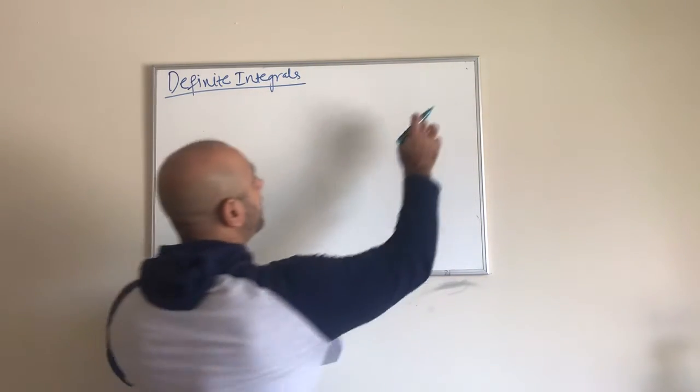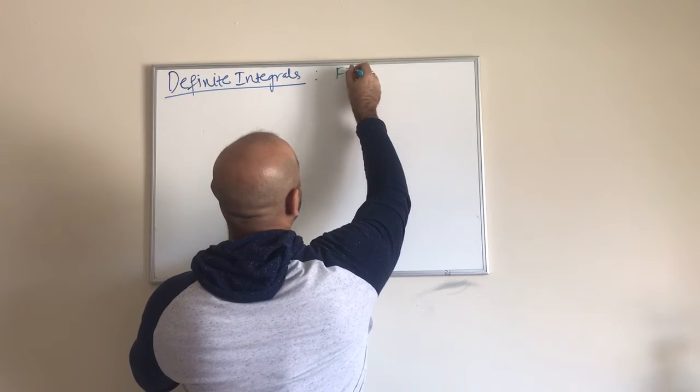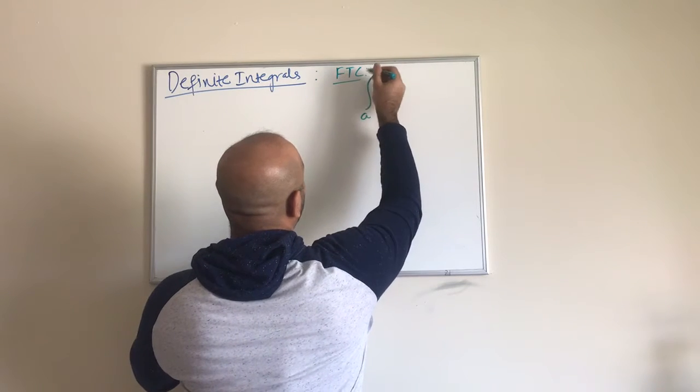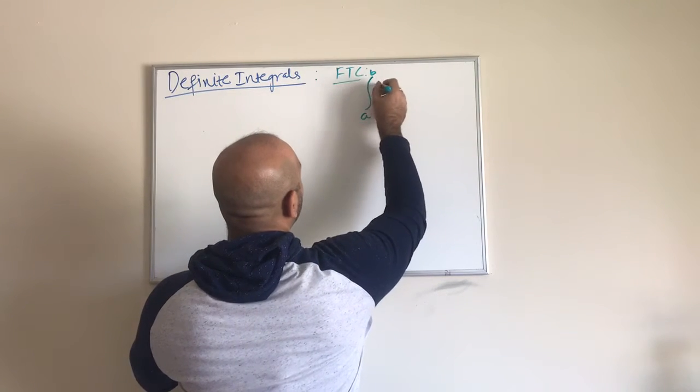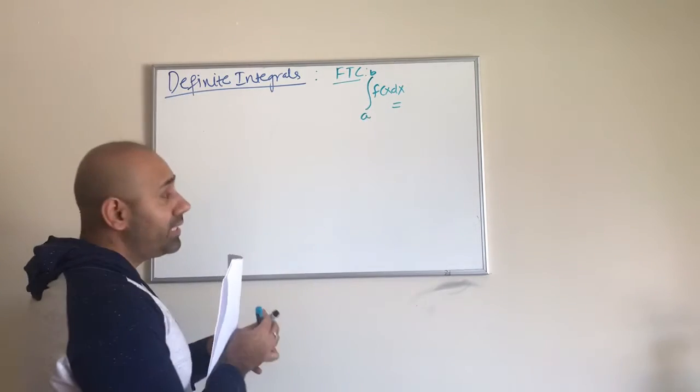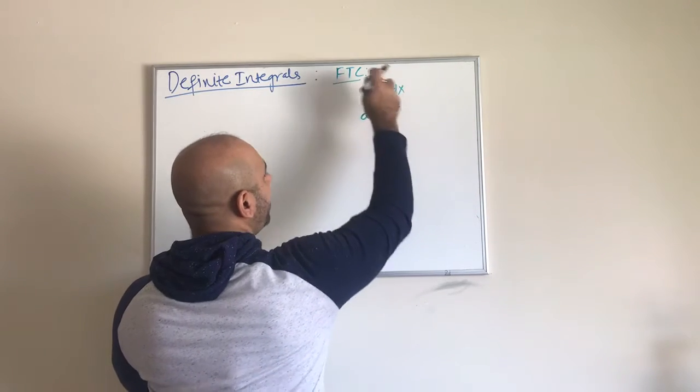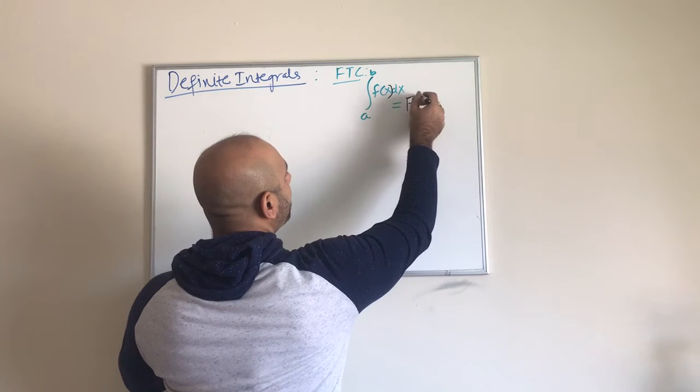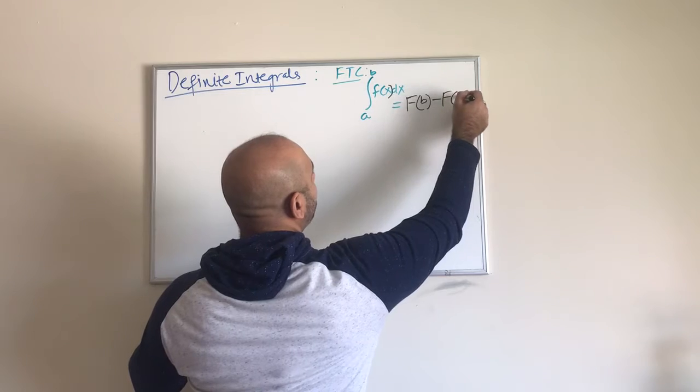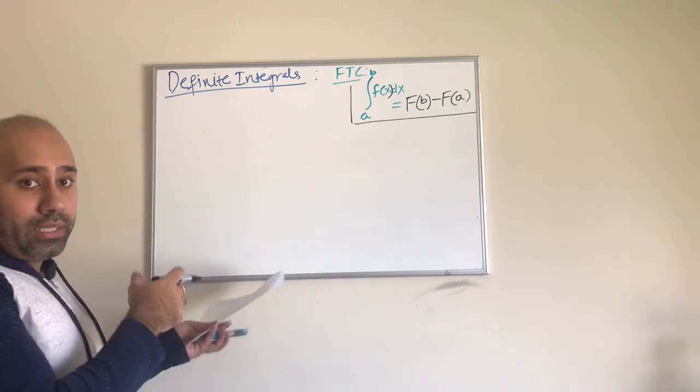So let us first rewrite the fundamental theorem of calculus. Using the fundamental theorem of calculus, which in short form is FTC, to integrate a function of the form from a to b as lower limit to upper limit f of x dx, what we simply do is we find the anti-derivative of the function. Of course, we know it has to be defined on this interval a to b. So we evaluate this function at the upper limit, the anti-derivative at the upper limit, and then at the lower limit and we take the difference.